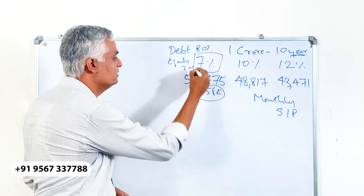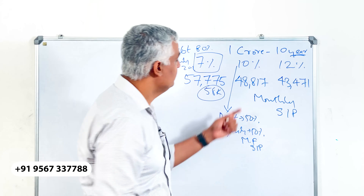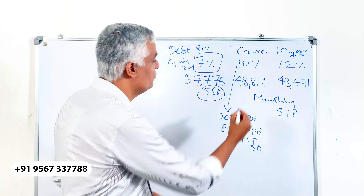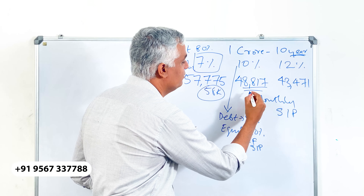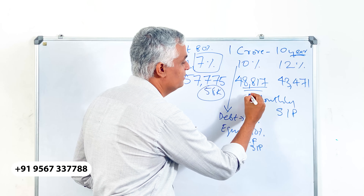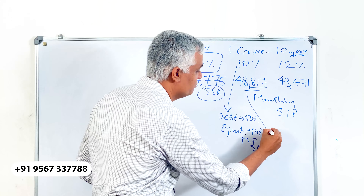So in this case, if you invest in debt funds, I give about 70% allocation to debt funds and about 30% to equity in the portfolio. If you do this, you will be able to get 7% return, provided you are picking the right funds.